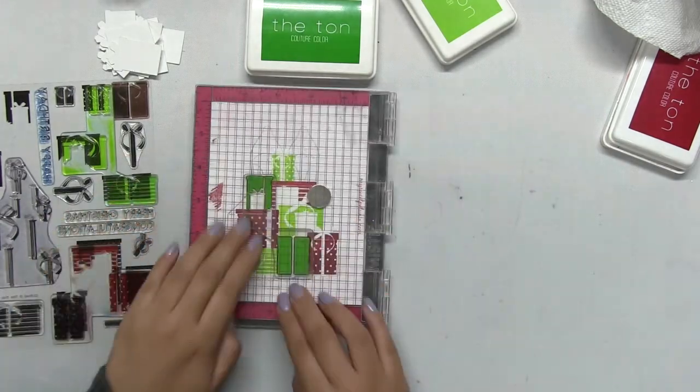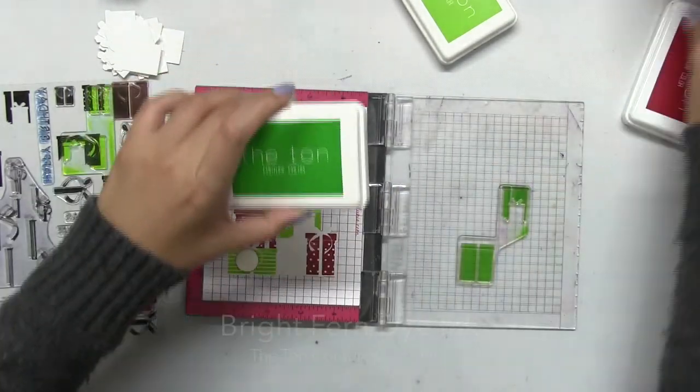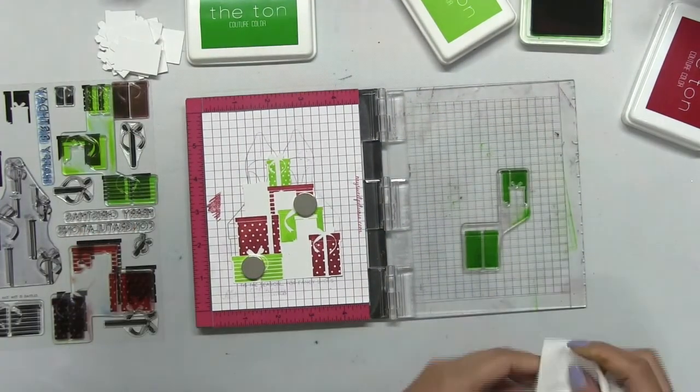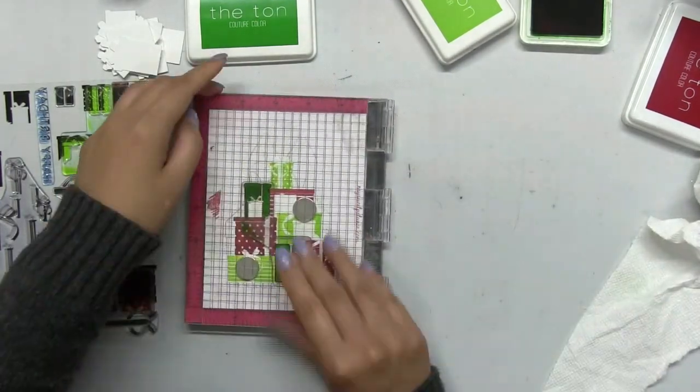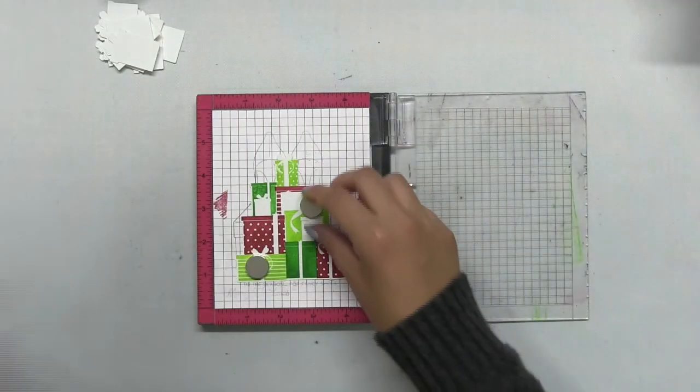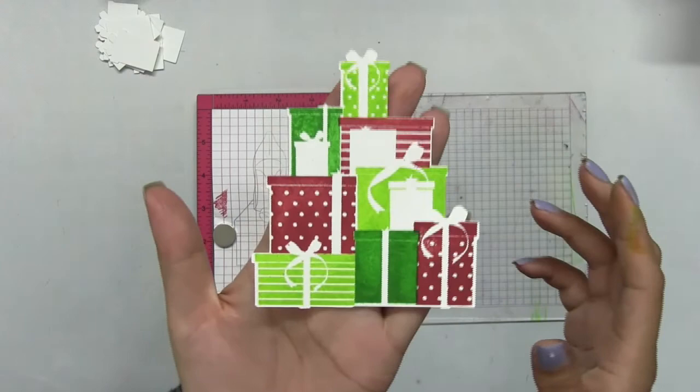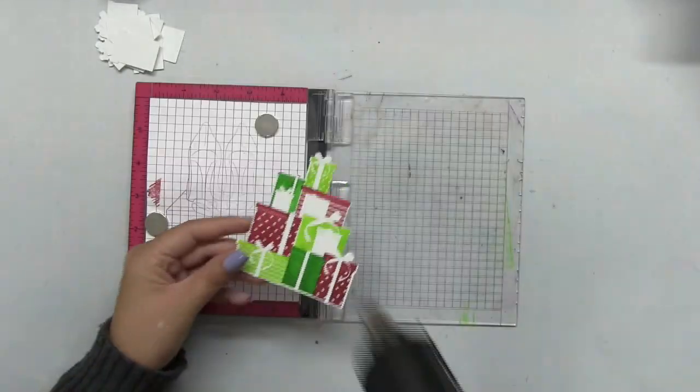Instead of layering colors over each other, you're just going to use three separate inks to get a three-toned look. This stamp set is much easier to stamp than those traditional layering florals because here you have a more two-dimensional result.